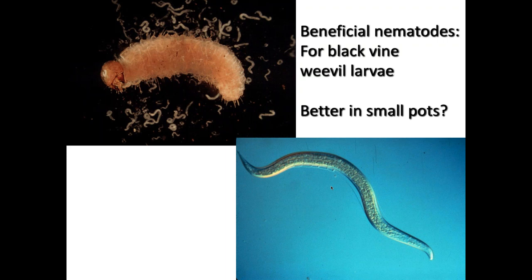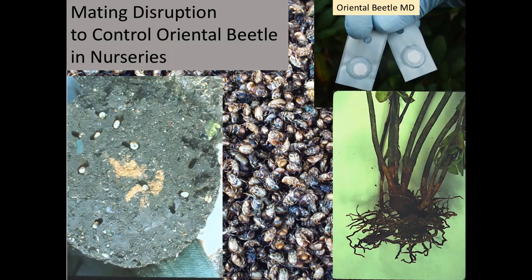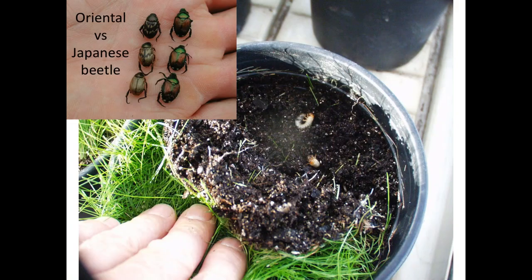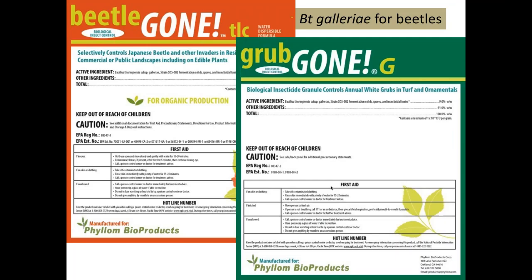We've had not very good results with nematodes for black vine weevil, but others have had better results, particularly when plants were growing in smaller pots where nematodes are better able to get to the larvae. Oriental beetle is a growing problem around the region in the northeast as it spreads. Grubs feed at the bottom of pots and will damage roots — the azalea plant shown is heavily damaged. There's a product called Oriental Beetle MD for mating disruption — it's the pheromone given off by females to lure males — and if you put enough out in the nursery area you can disrupt mating and get control over time.